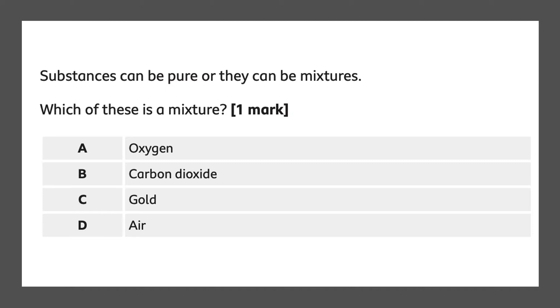Option A, oxygen. This is not a mixture because it's an element in the periodic table. Carbon dioxide is a compound because it is made out of elements carbon and oxygen which are chemically combined, so it's really hard to break them apart.